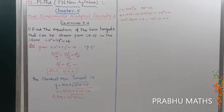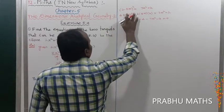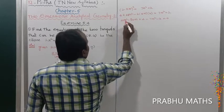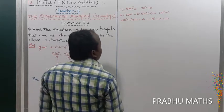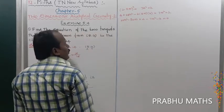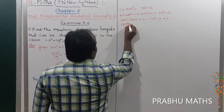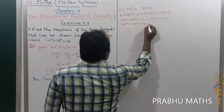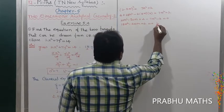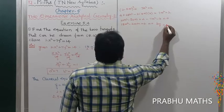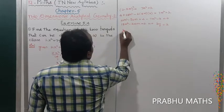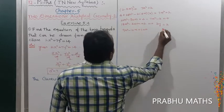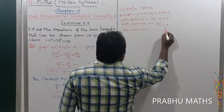Dividing the entire equation by 2: 9m² − 10m + 1 = 0.